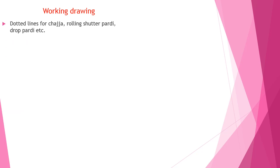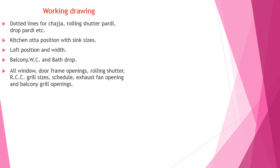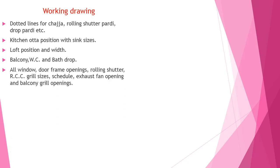In working drawings, dotted lines for chajjas, rolling shutters etc. have to be marked. Kitchen counter with sink sizes, loft position and width, balcony, WC and bath drop (i.e., sunken slab), and all windows, door framing, and rolling shutters etc. have to be marked in the drawing.